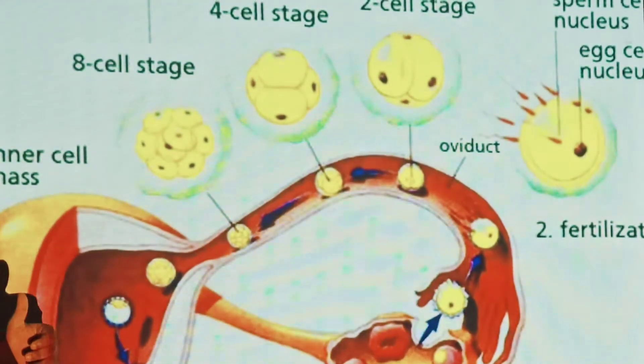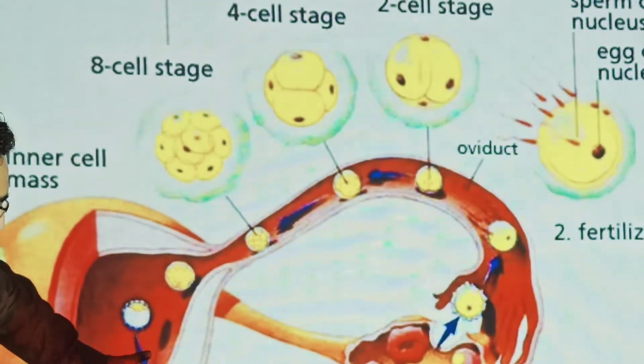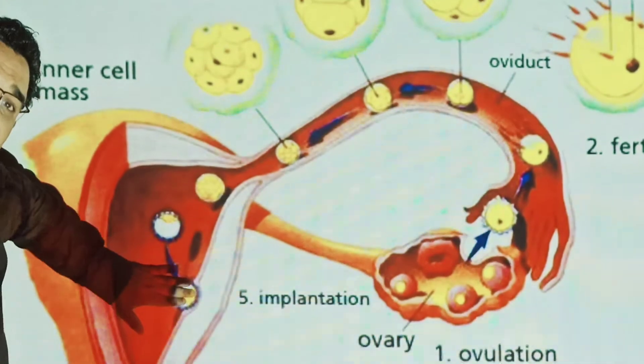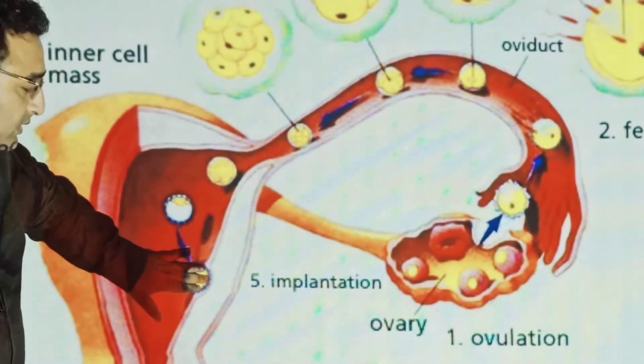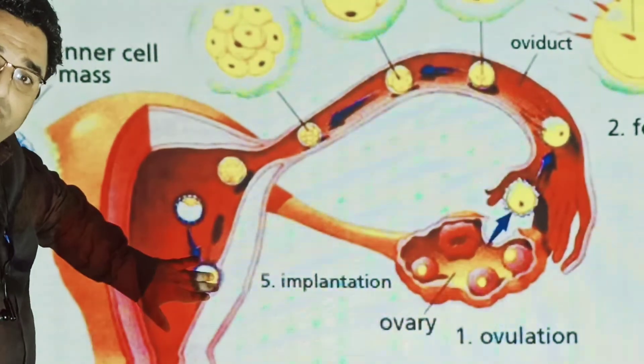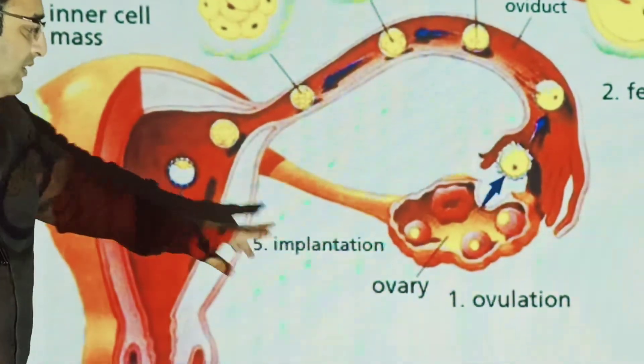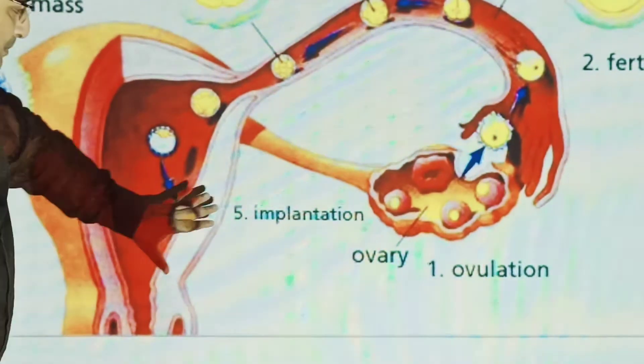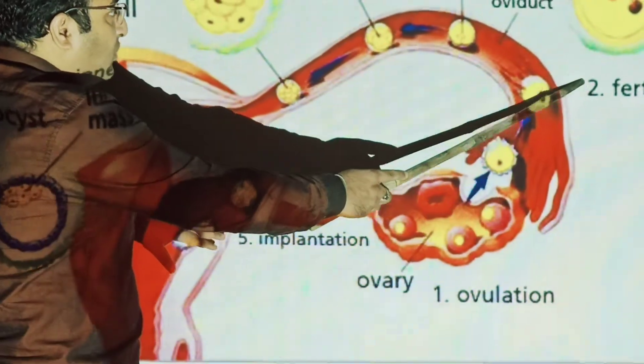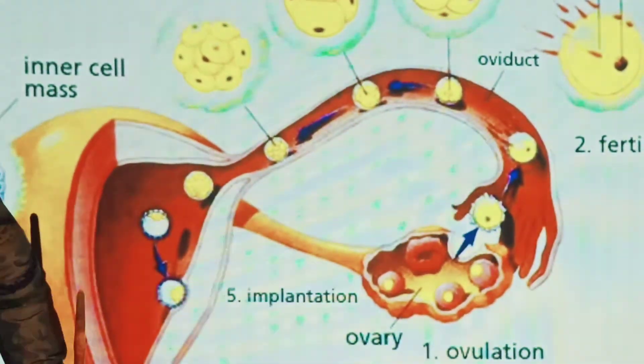It attaches, the outer mass layer of cells to the uterus wall. What do we call implantation? This implantation and fertilization, this is how the process occurs.